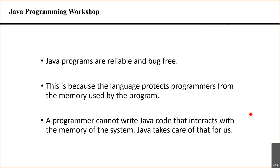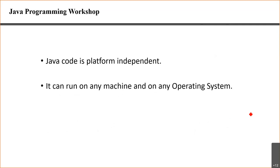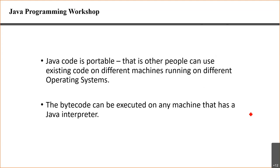Java programs are usually reliable and bug-free because you cannot do memory manipulation — you cannot mess with memory. Since you convert code into bytecode and the bytecode can be translated by any Java-enabled machine, it is platform-independent. A program compiled on a Windows machine will work exactly the same on a Linux machine, as long as Java and the Java Virtual Machine are installed.